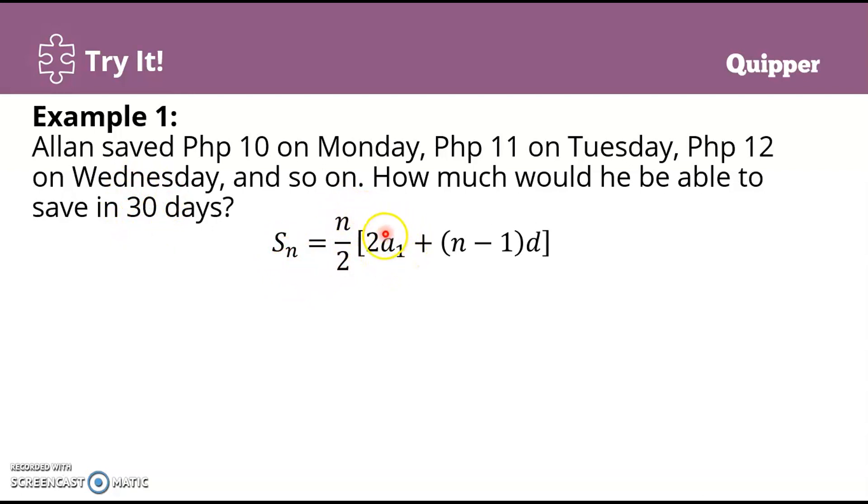And of course our first term is 10 pesos, right? So n is 30. Substituting, we have S₃₀ = 30/2[2(10) + (30-1)(1)].